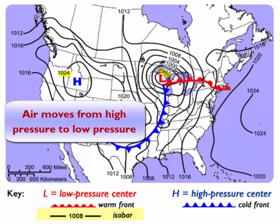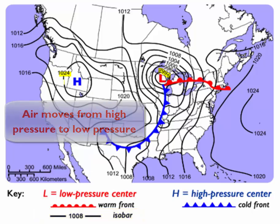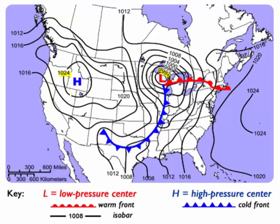One way to think about this is to imagine it like a topographic map. If you've ever looked at a topo map that shows mountains and valleys, you could think of this as an air pressure mountain and this as an air pressure depression — and just like water flows from the mountain to the depression, air flows the same way.